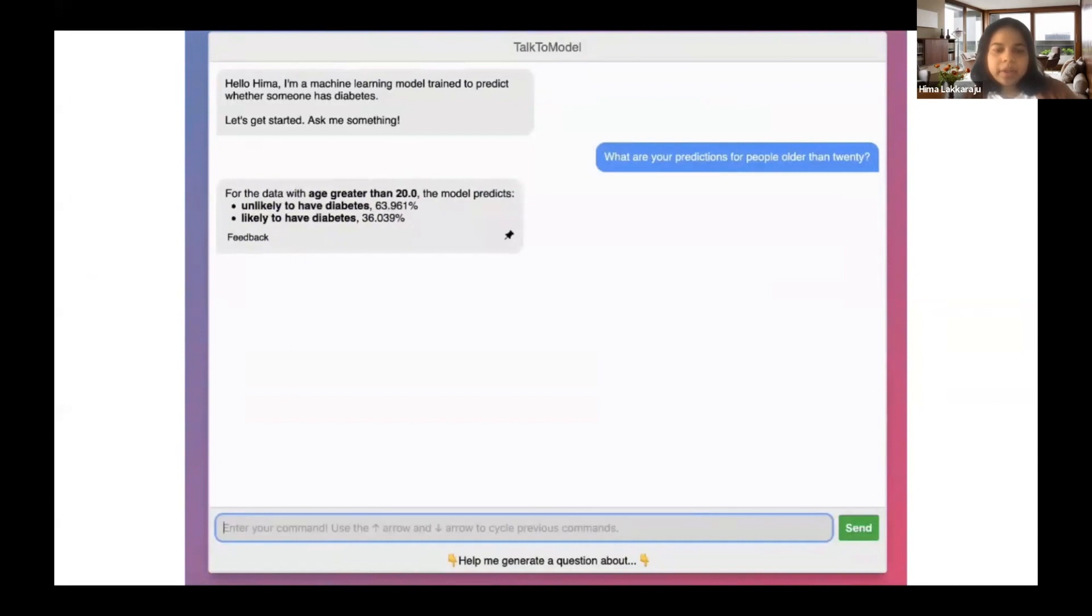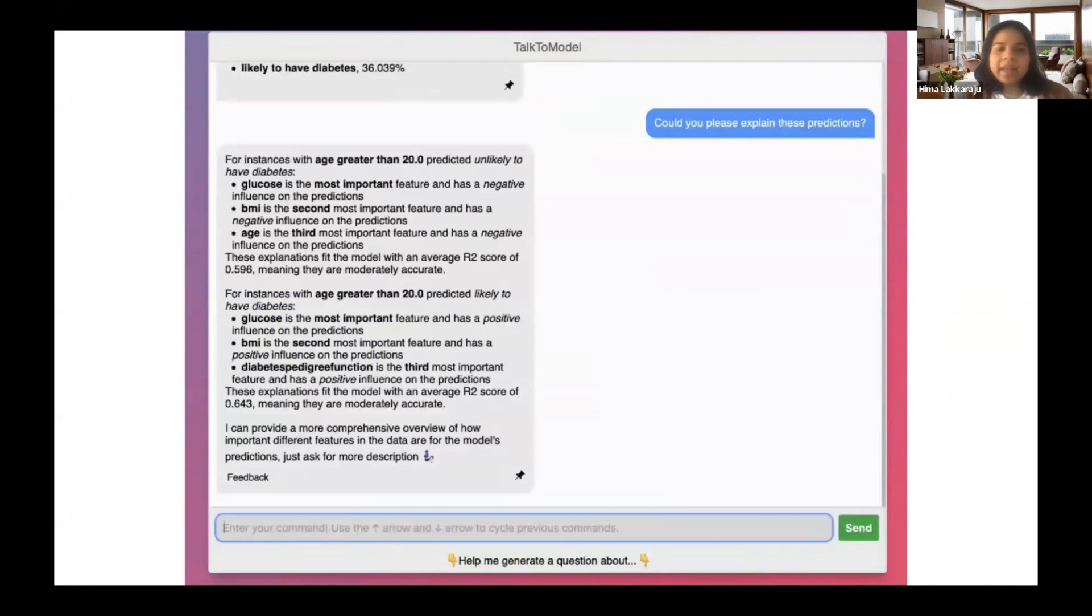With this tool, you can literally chat with a model in natural language and try to converse with it and understand what predictions it's making and also the explanations for different kinds of predictions it is making. In this case, when we say could you please explain these predictions, it's saying that glucose, BMI, and age are the top three most important features that are driving the predictions of individuals whose age is higher than 20, for instance.